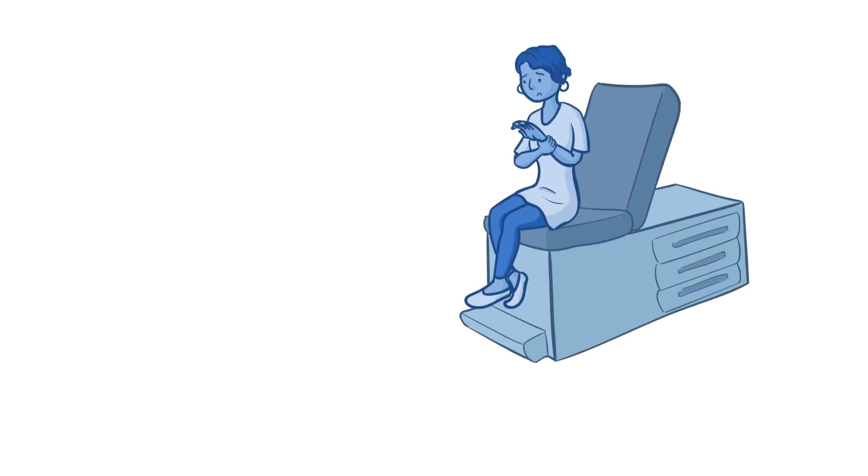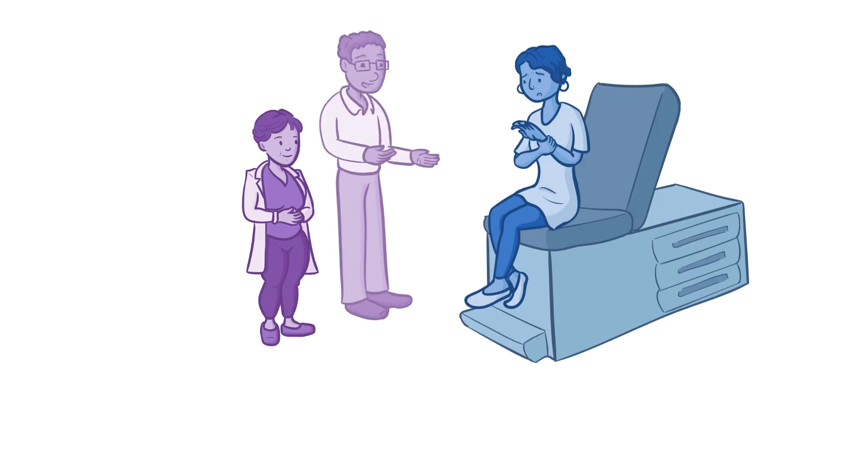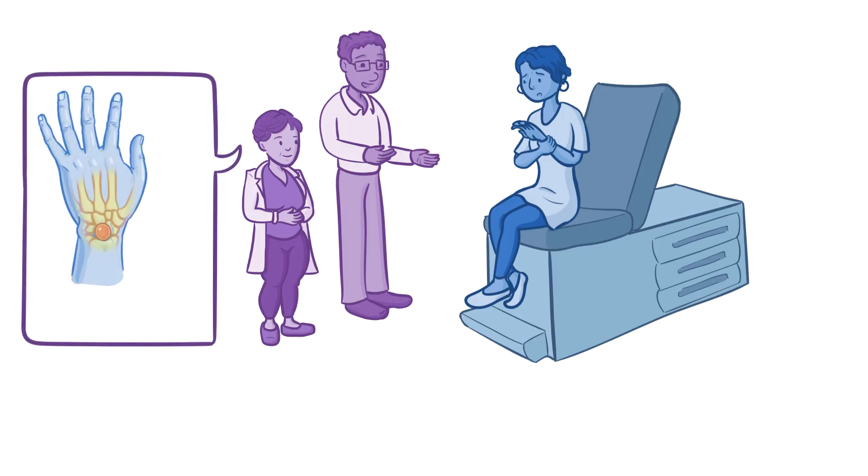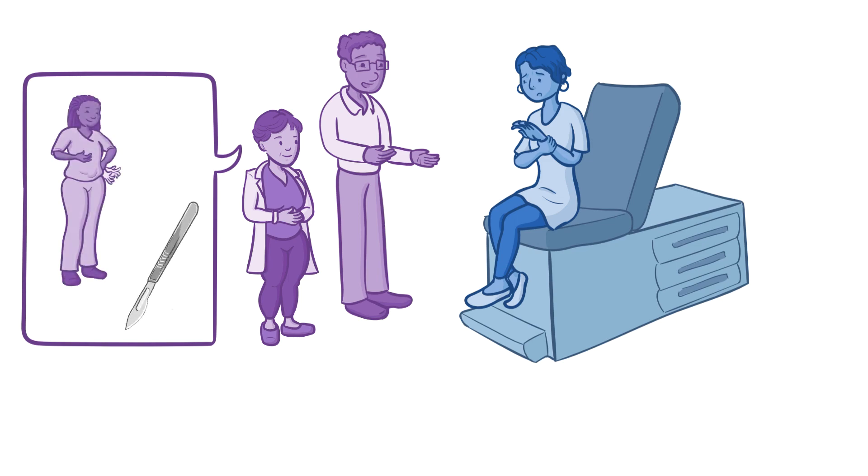A few days later, Sophia went to her primary care physician, who examined her wrist. With the help of a Spanish language interpreter, her doctor reassured her that it was most likely a ganglion cyst and not a tumor. Her doctor also suggested that she get the cyst surgically removed and set up an appointment with the orthopedic surgeon. Sophia went home feeling relieved that it wasn't a bone tumor, and was glad that it would get removed.